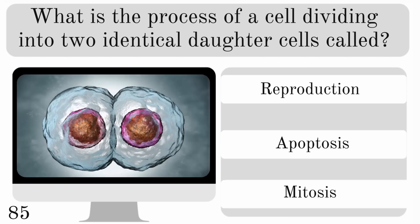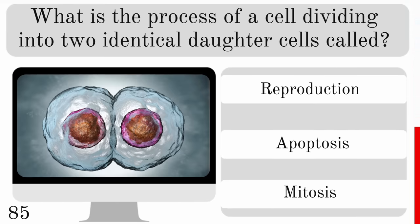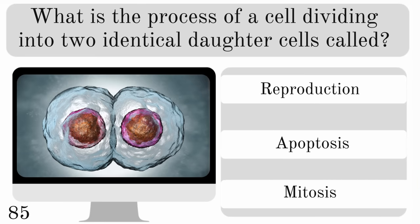What is the process of a cell dividing into two identical daughter cells called? Is the answer reproduction, apoptosis or mitosis? The correct answer is mitosis.